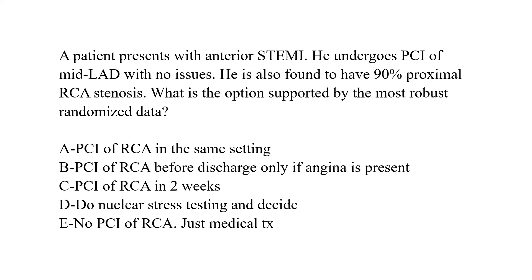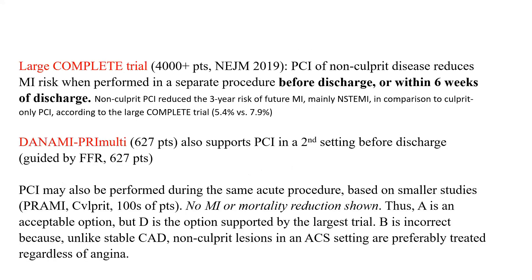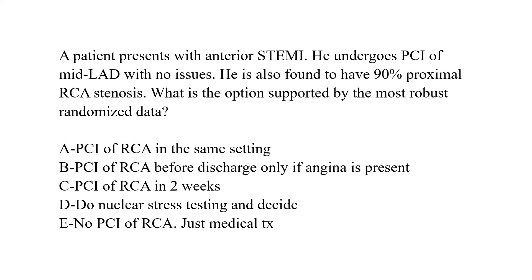My answer is C — PCI of RCA in two weeks — with A as the next best answer. The most important trial in this setting is the COMPLETE trial. It's the most recent out of them: 4,000-plus patients, published in New England Journal 2019. It randomized patients to PCI of non-culprit disease in a separate procedure before discharge or within six weeks versus no PCI at all unless severe.